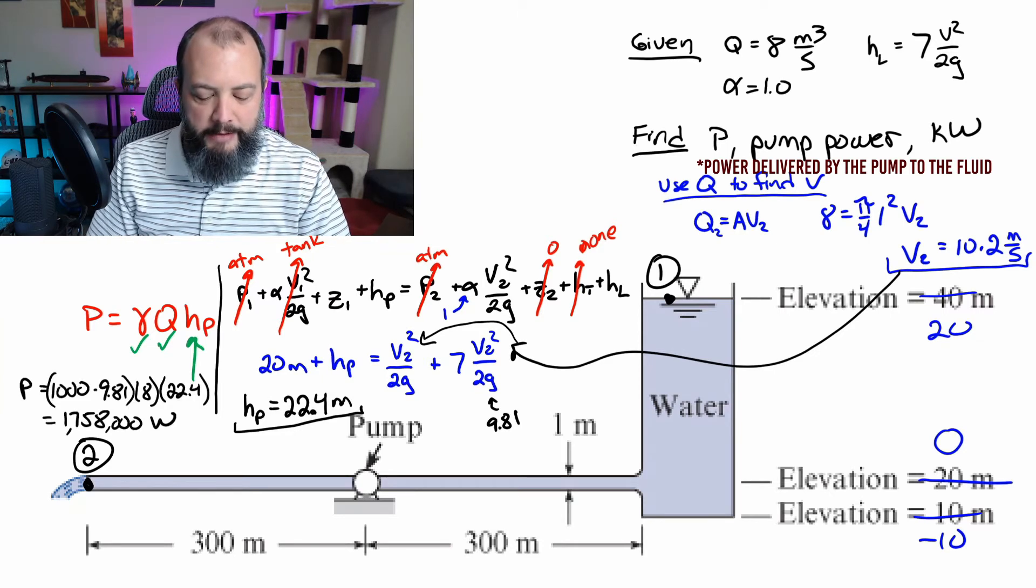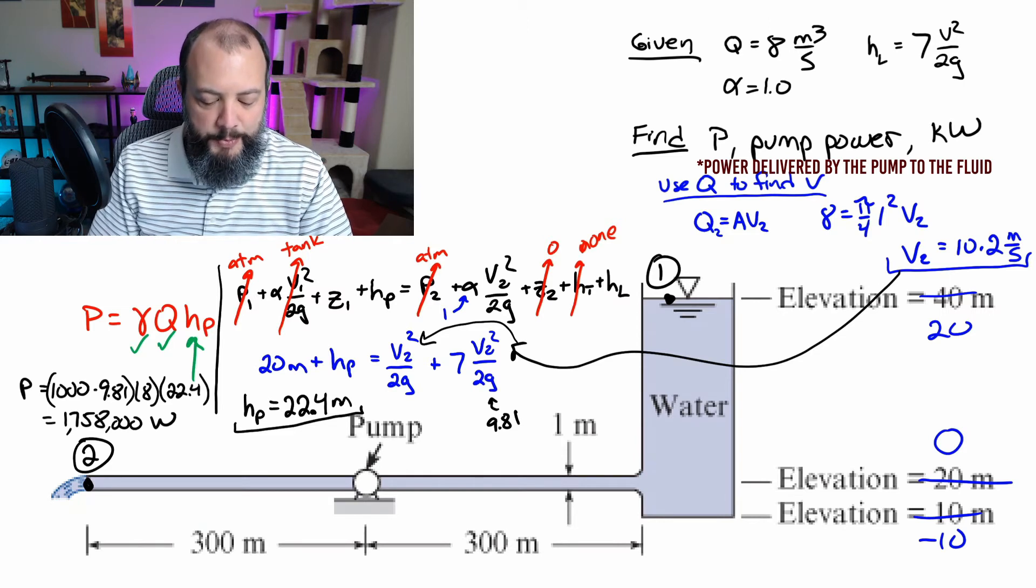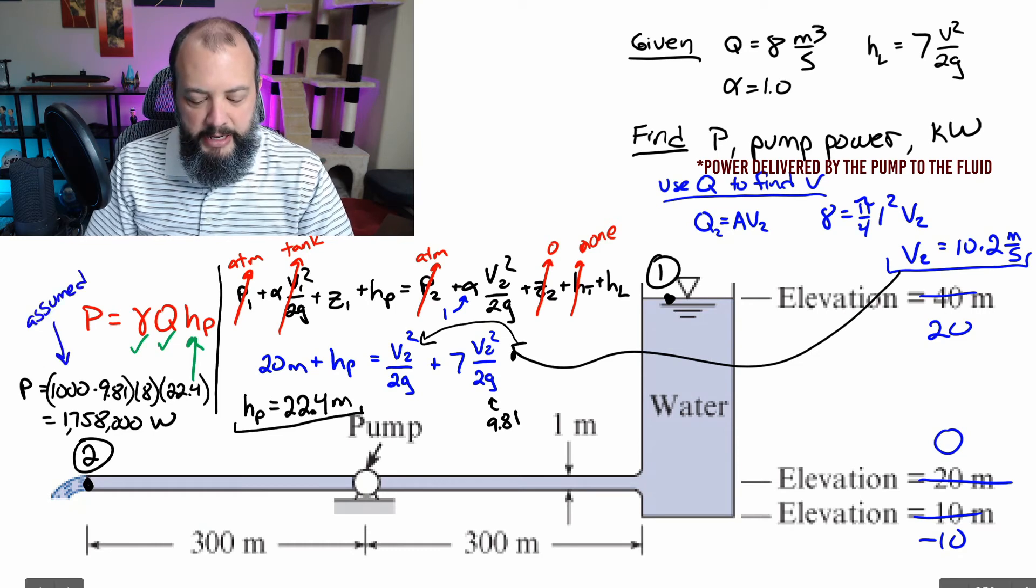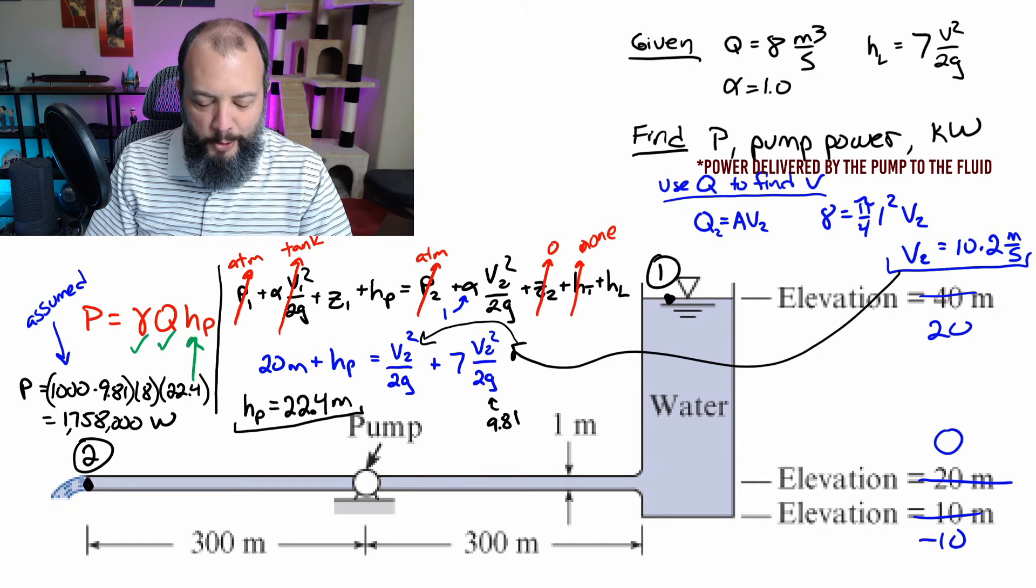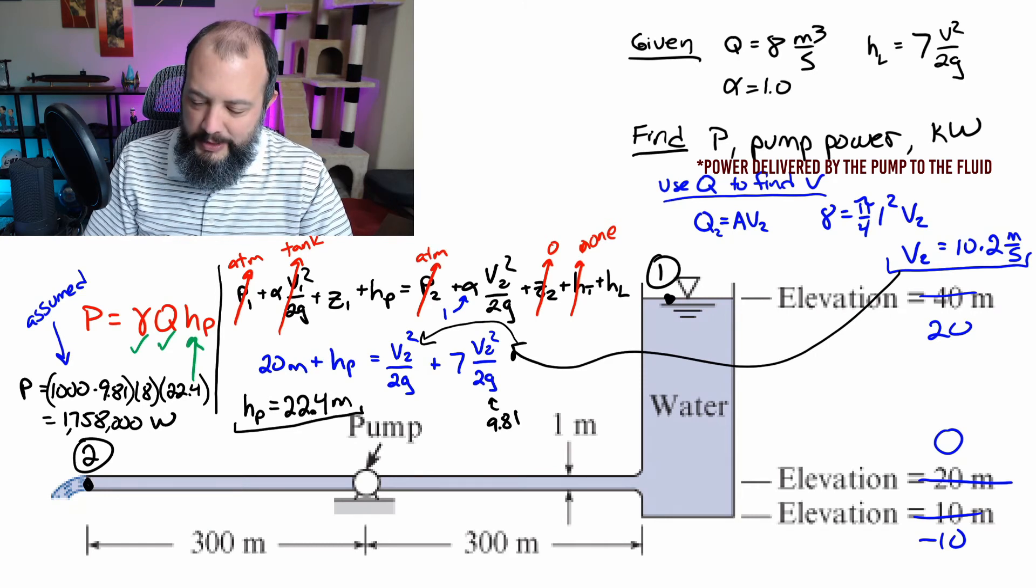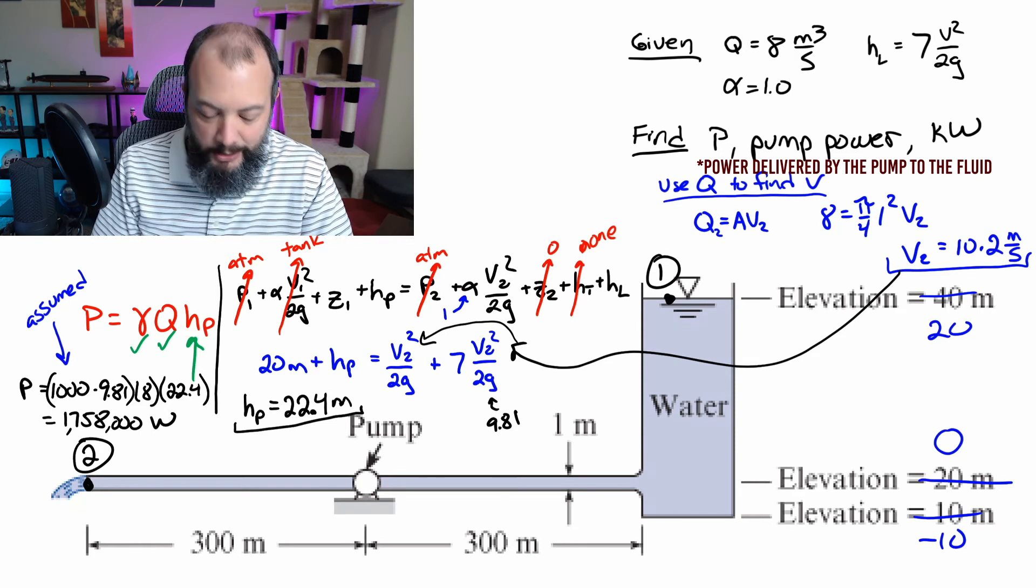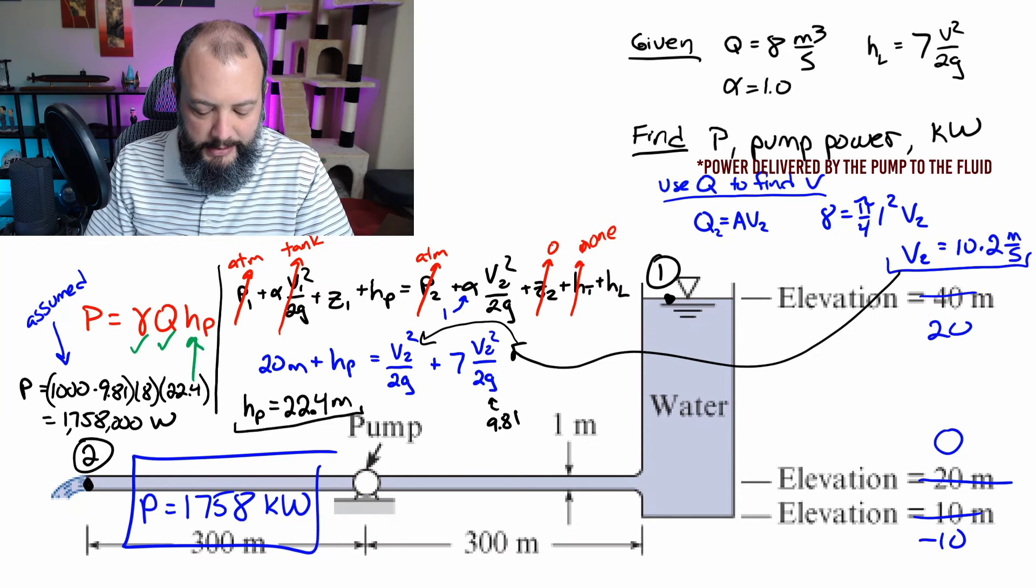And so in order to find power, I first had to assume a density for water of 1000 kilograms per meters cubed, since that value wasn't specifically given in the problem. And then multiply by the flow rate, and then the 22.4 meters of pump head that was just solved for, and we get about 1.7 million watts. And so since I said at the beginning of the problem that I wanted to express this answer in kilowatts, then I can box right there my final answer of 1758 kilowatts.